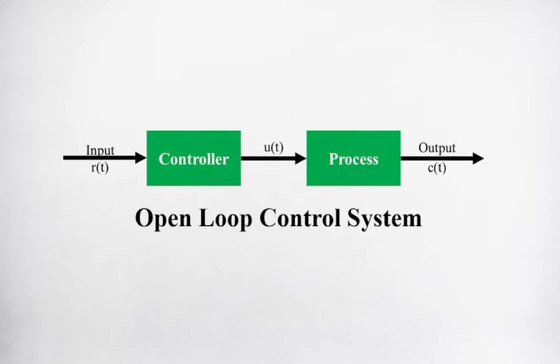Open-loop systems don't have any checks and balances because they don't have a feedback system.